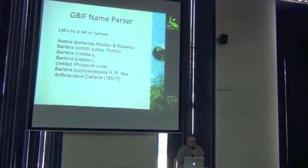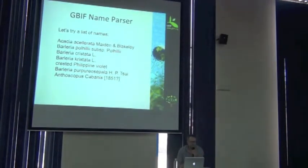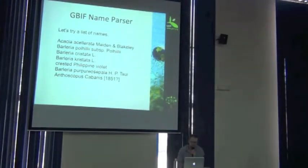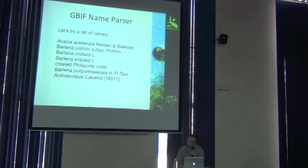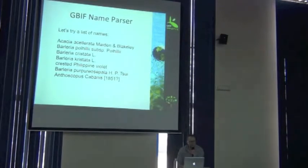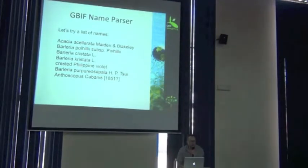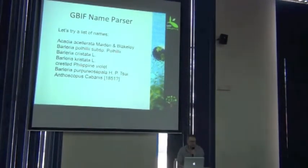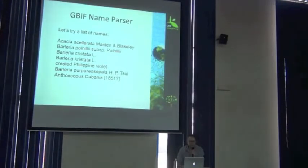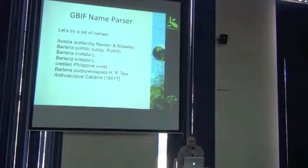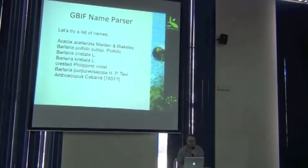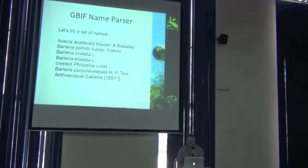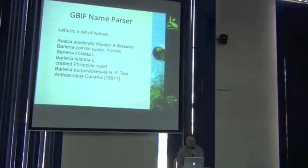For this demonstration, I thought I would have a nice list of names for you to see. And I'd like to run those through the GBIF name parser to see if they are valid names or not. Looking at this list of names, is there anybody that can tell me if there's maybe one or two that look suspicious?